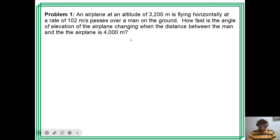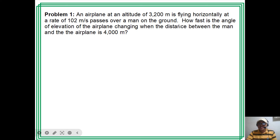Problem 1. An airplane at an altitude of 3,200 meters is flying horizontally at a rate of 102 meters per second, passes over a man on the ground. How fast is the angle of elevation of the airplane changing when the distance between the man and the airplane is 4,000 meters?